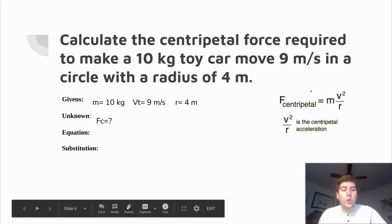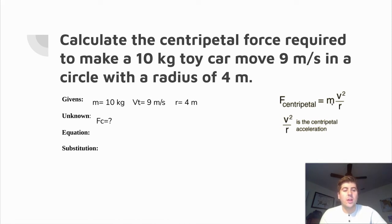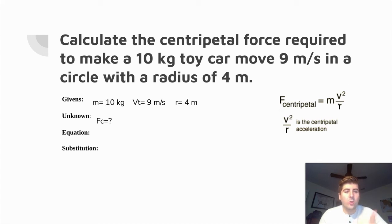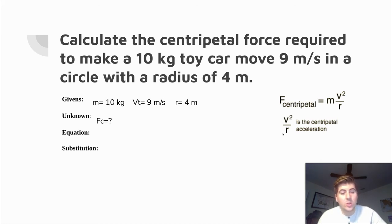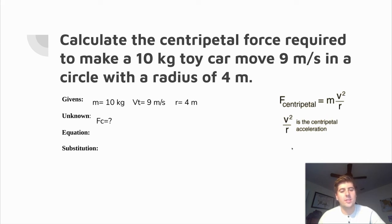Our equation is: centripetal force equals mass times tangential velocity squared divided by the radius. This looks a lot like force equals mass times acceleration from last semester — the only difference is we replaced acceleration with velocity squared divided by the radius. That's because centripetal acceleration equals velocity squared over radius, so we basically just substituted that expression in for acceleration. It should look pretty familiar.